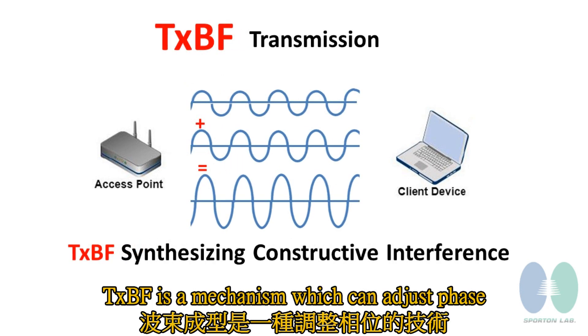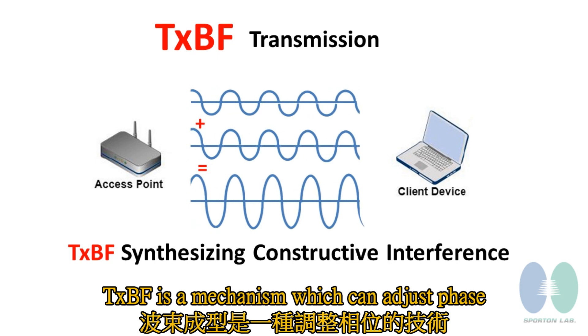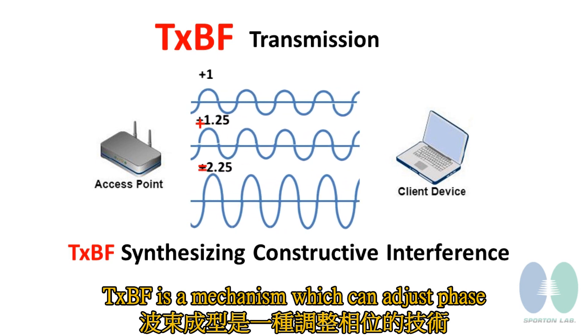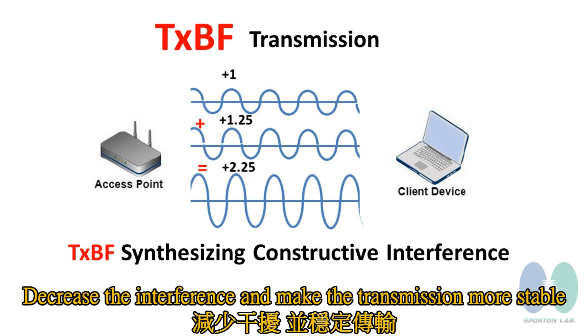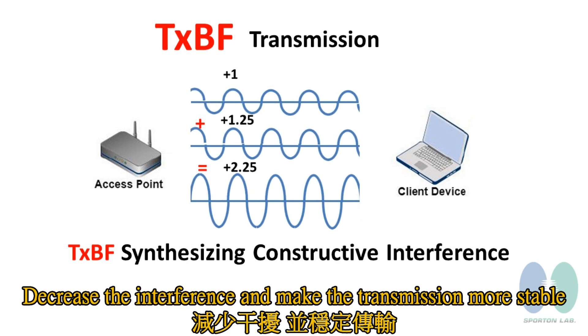Transmit beamforming is a mechanism which can adjust fast, decrease the interference, and make the transmission more stable.